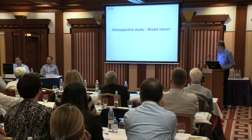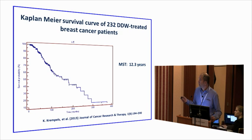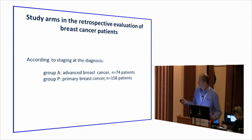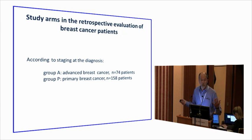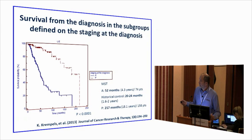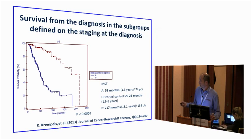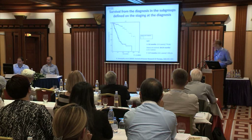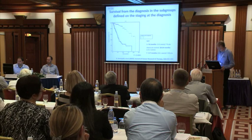For breast cancer, looking at the whole population, the median survival time is 12 years. The staging question matters: the 74 late-stage patients had a median survival time of 52 months, while those starting in an early stage had a median survival time over 200 months. The historical control is 20–24 months, so here again we see a two- to threefold increase in median survival time.